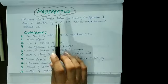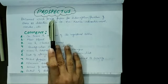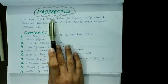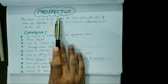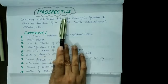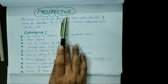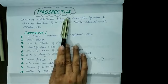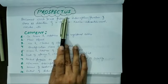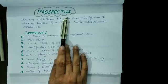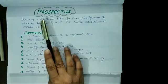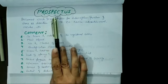Hello dear students and welcome back to the online classes of Smart Indian Model School. As we were doing the topic of different types of documents required for the formation of a company, I have told you about two documents: number one is Memorandum of Association, and number two is Article of Association. Now the third one is Prospectus.